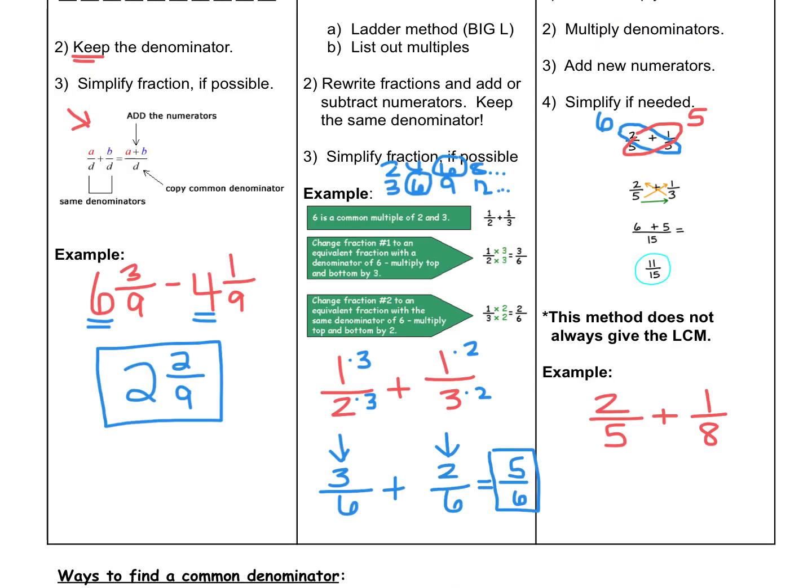Take a moment to write down the example: 2 fifths plus 1 eighth. This is not my favorite strategy because it doesn't always give you the least common multiple, but it is another option for you. So now let's take a look at 2 fifths plus 1 eighth. Our first step is to cross multiply. On your paper, circle or highlight 2 and 8, and what we do is multiply 2 times 8, and I put the 16 down below.